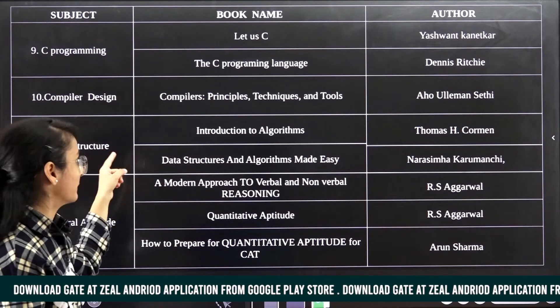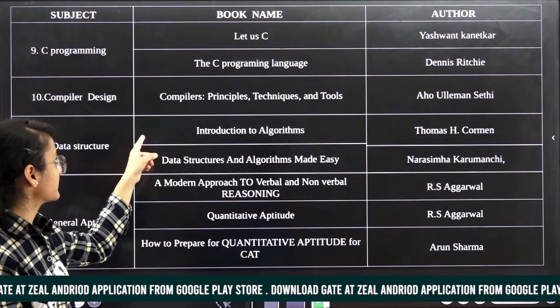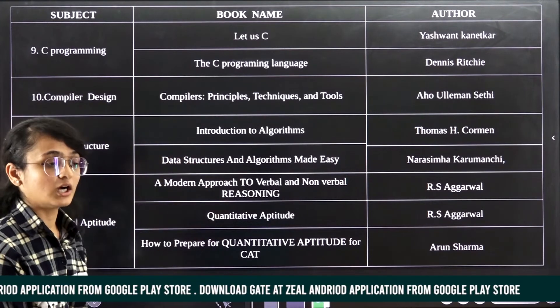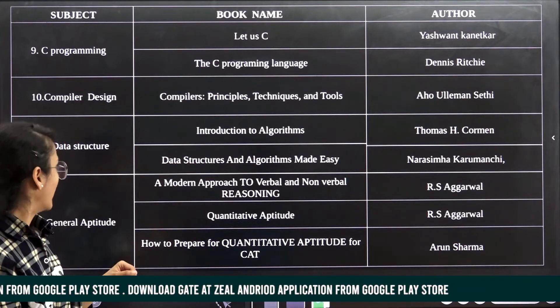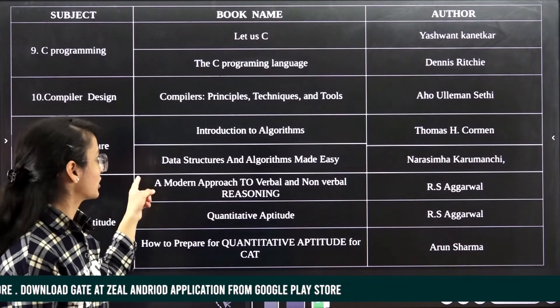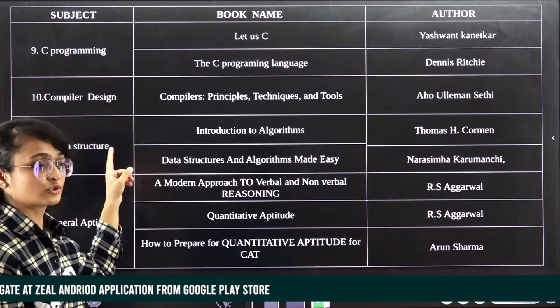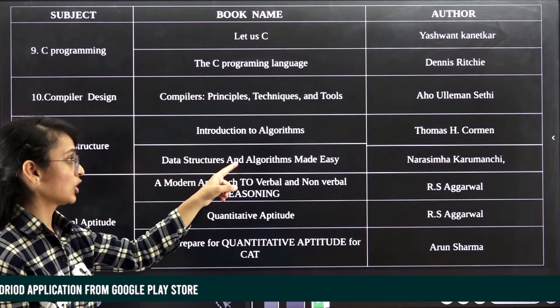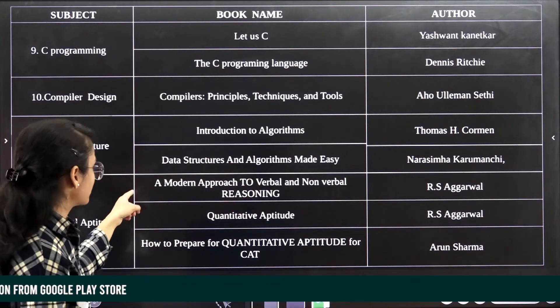Next one is Compiler Design. For Compiler Design, I followed Compilers: Principles, Techniques, and Tools by Aho, Ullman, and Sethi. And the next one is for Data Structure. For Data Structure, the books are same as for Algorithms: Introduction to Algorithms by Thomas H. Cormen and Data Structures and Algorithms Made Easy by Narasimha Karumanchi.